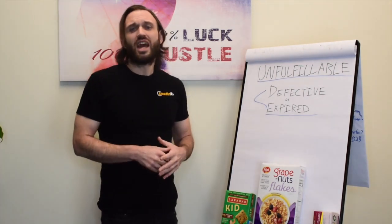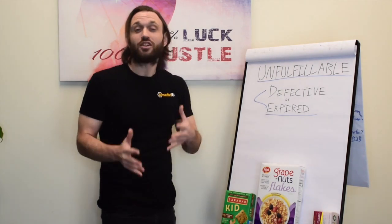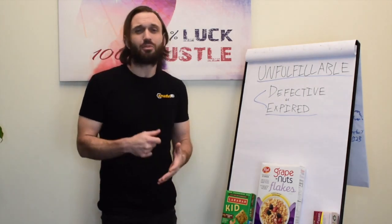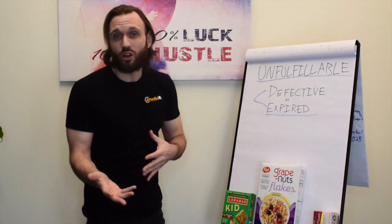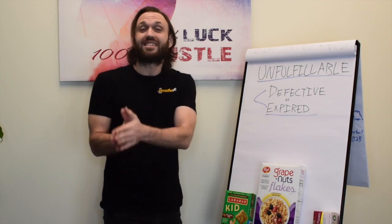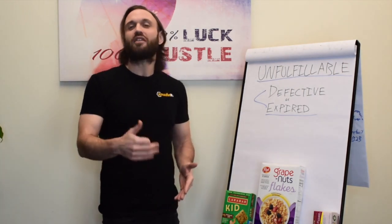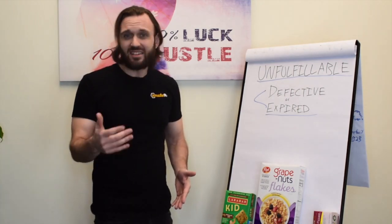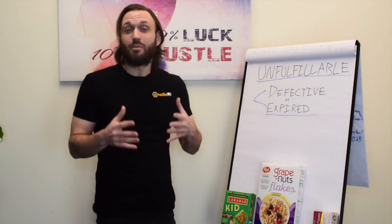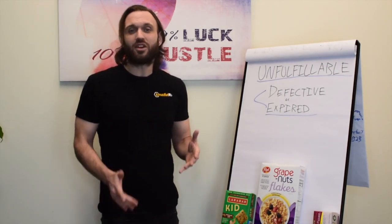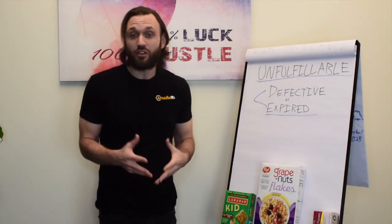Then we have distributor damage — damaged by the seller, vendor, or distributor upon receiving. Amazon scans inventory at their fulfillment centers and flags it as distributor damage because they received it that way. That's different from warehouse damage, which is a product damaged in Amazon's own warehouse. If it's warehouse damaged, you can get the cost of that product back — you need to look at the Inventory Adjustments report and make sure Amazon is reconciling and refunding you properly, because it wasn't your fault.